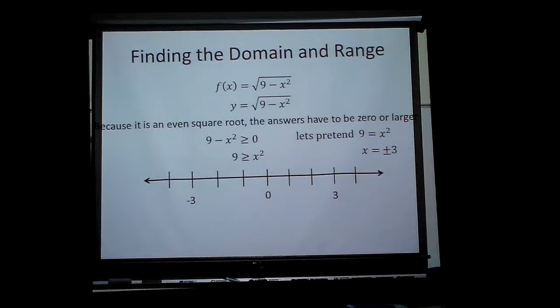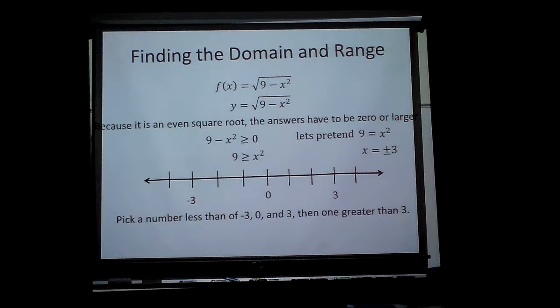So what happens is this: I know I have answers at negative 3 and 3, and negative 3 and 3 will be part of the solution, but the question is, am I looking at values outside of these values or inside that make it true? And here's how I do it.